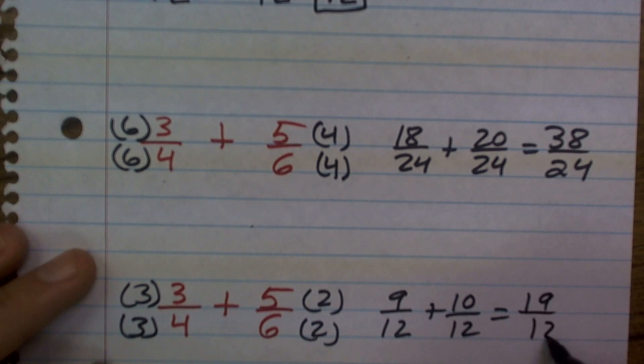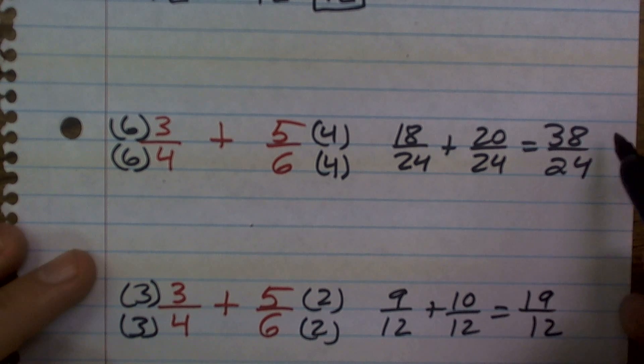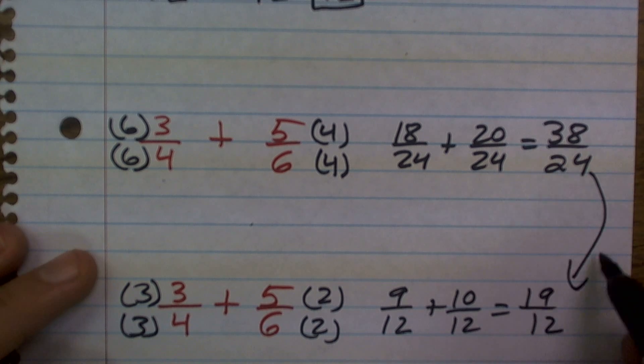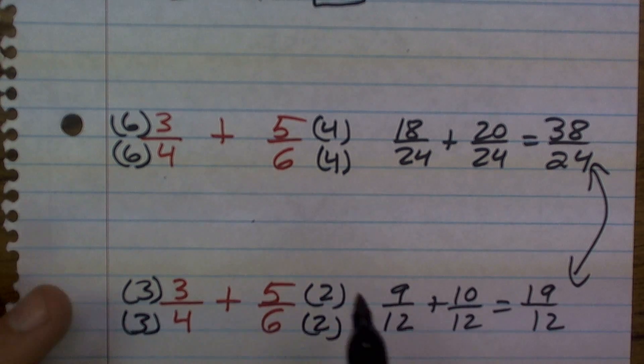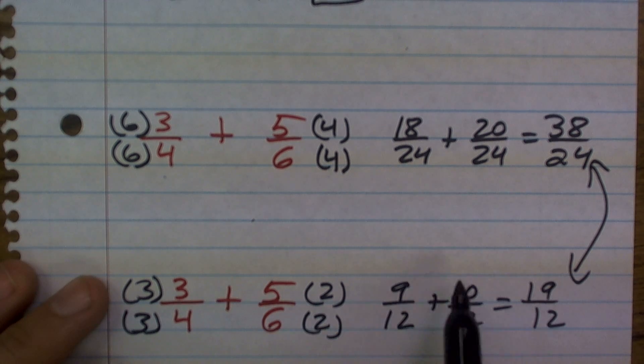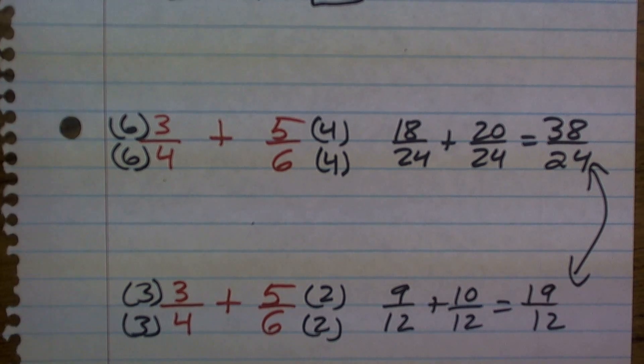which equals 19 over 12, which if I were to reduce this by dividing it by 2 on the top and bottom, I would get 19 twelfths. So just be careful. Even though this works for all of them, you want to find your lowest common multiple. Therefore, you already have your reducing done for you.